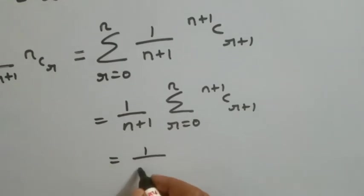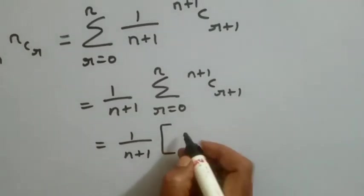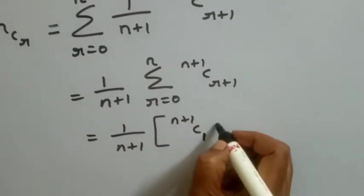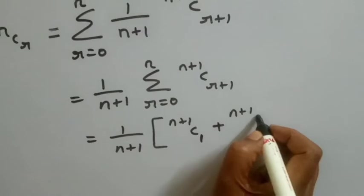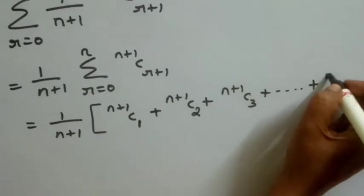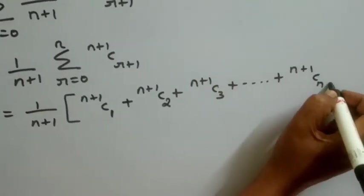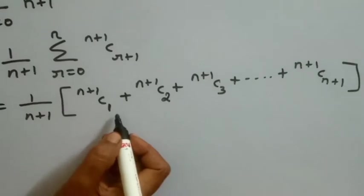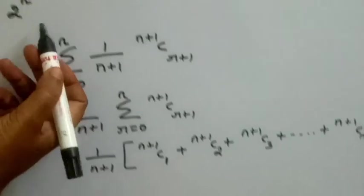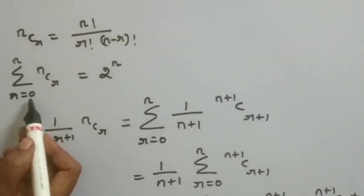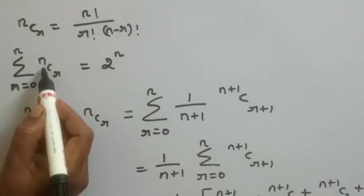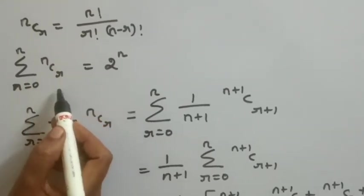Expanding this, we get 1 by N plus 1 times the sum of N plus 1 C1 plus N plus 1 C2 plus N plus 1 C3, and so on up to N plus 1 C N plus 1. Using the second formula, the summation R equal to 0 to N of NCR equals 2 power N.